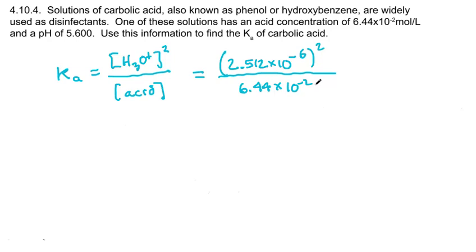So if we crunch that out, divide by 6.44 times 10 to the minus 2, I get an acid constant of 9.8 times 10 to the minus 11. Not too bad, I hope.